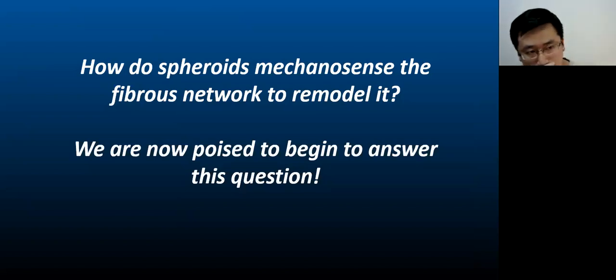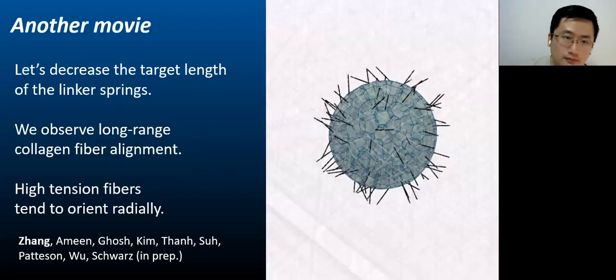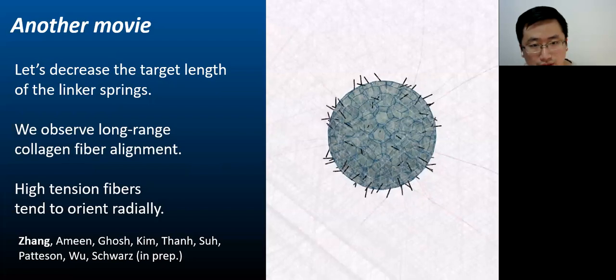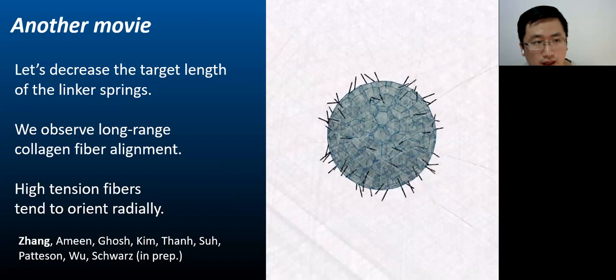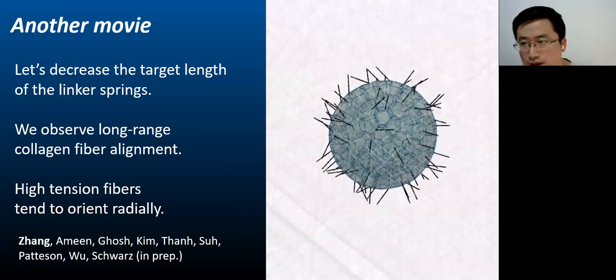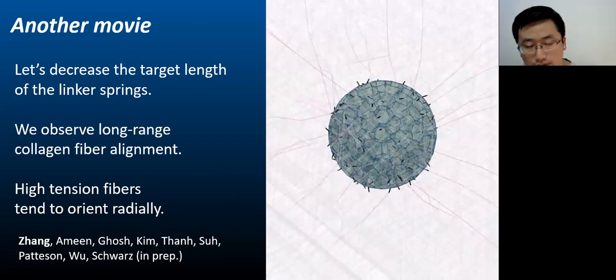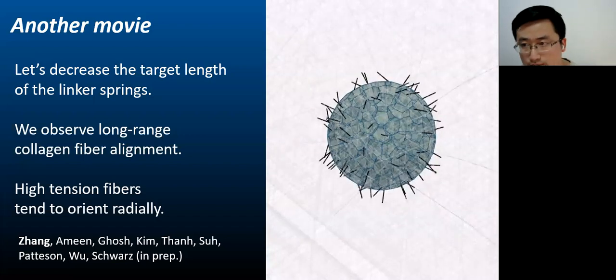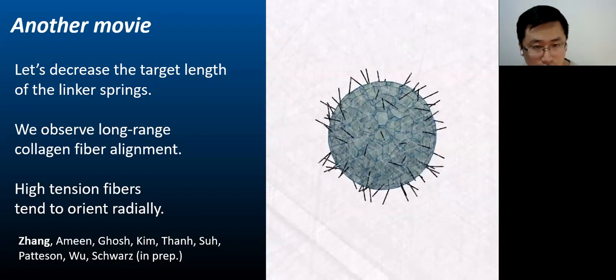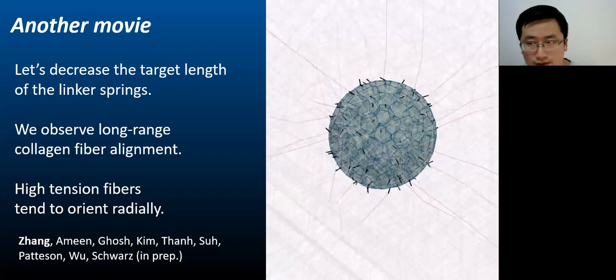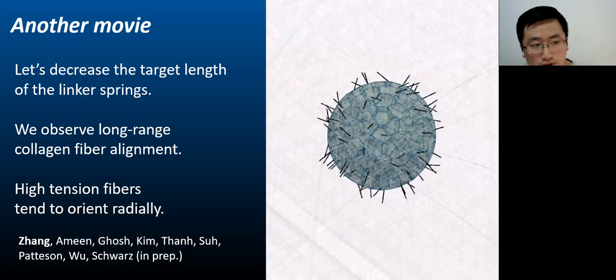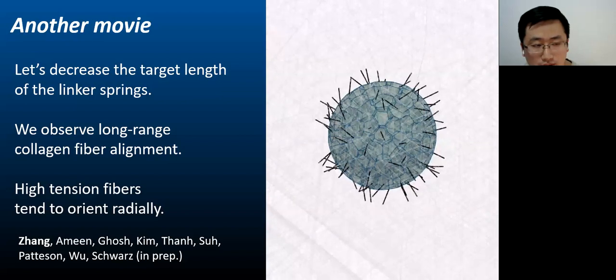How do spheroids mechanosense the fiber network to remodel it? We are now ready to begin to answer this question. To mimic the activity, the interaction between cells and the surrounding ECM fibers, we decrease the rest length of the linker springs. By shrinking those linker springs shown as black rods in the movie, we mimic the interaction between cells and surrounding fibers. By decreasing, by shrinking those linker springs, we observe long range collagen fiber alignment. We also see high tension fibers tended to orient radially.